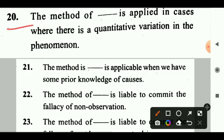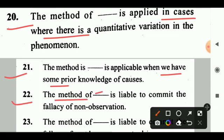Question 19: The method of dash is applied in cases where there is a quantitative variation in the phenomenon. Answer: Concomitant variation. Question 21: The method of dash is applicable when we have some prior knowledge of causes. Answer: The method of residues. Question 22: The method of dash is liable to commit the fallacy of non-observation. Answer: Agreement.